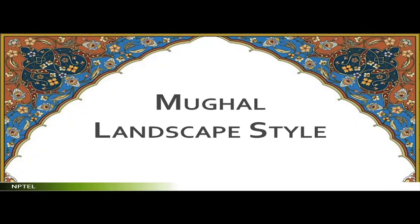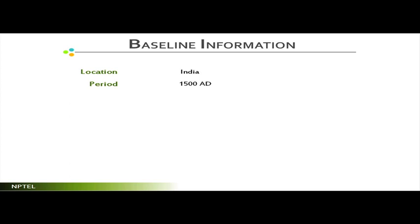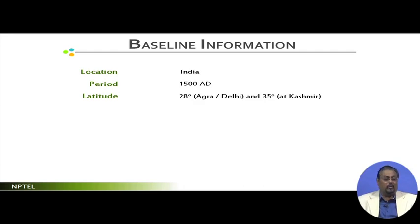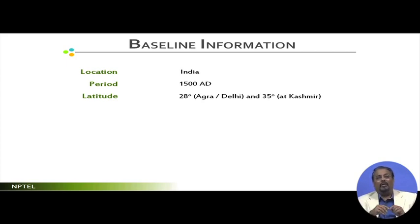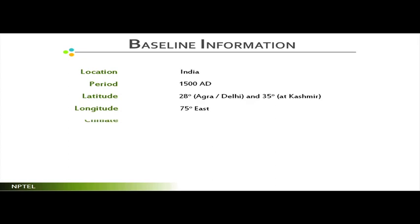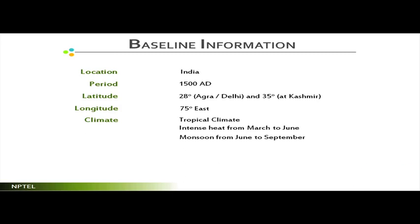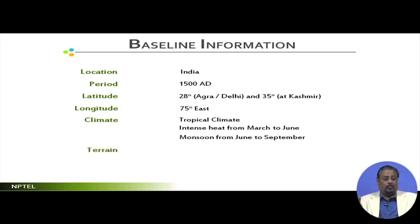Element-wise in the Spanish landscape we found water bodies, fountains, vegetation, and steps. In Mughal we also find similar things. The baseline information: location is India, the period is around 1580, latitude is 28 degrees in Agra and Delhi, and 38 degrees at Kashmir. In India we have two regions - Delhi region and Kashmir region. Delhi is a typically hot arid zone and Kashmir is a cooler hilly area. The whole Mughal garden concept developed in these two parts which earned popularity in history. Longitude is 75 degrees East. The climate is tropical - intense heat from March to June, monsoon from June to September.